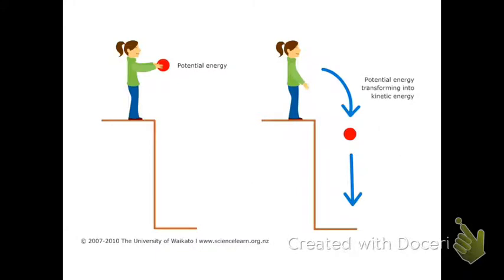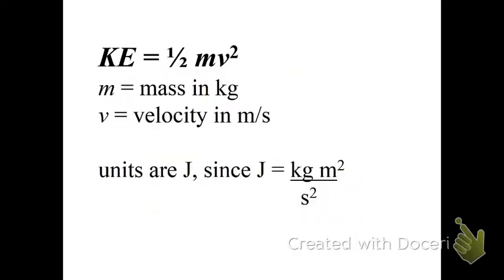There you go. Potential energy is she's holding the ball. Kinetic energy is she dropped the ball. If you haven't seen this formula yet in your lifetime, well, I don't know what to tell you. Kinetic energy is half mass times velocity squared, KE = ½mv².